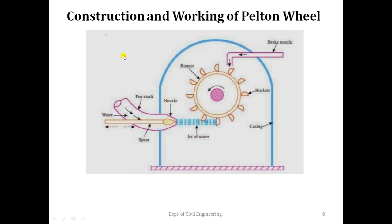A Pelton turbine consists of a rotor at the periphery of which are mounted equally spaced double hemispherical or double ellipsoidal buckets. Water is transferred from the high-head source through a penstock — pipes of larger diameter carrying water under pressure — fitted with a nozzle. As water passes through the nozzle, it gets converted into a high-speed jet. A needle spear moving inside the nozzle controls the water flow through the nozzle, providing smooth flow with negligible energy loss. By moving the needle spear in and out, we can control the rate of flow.